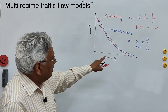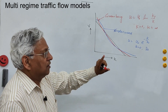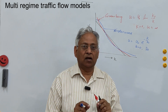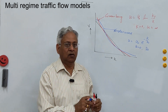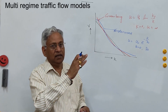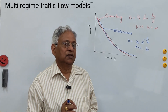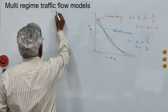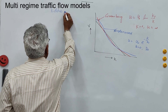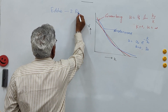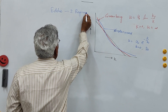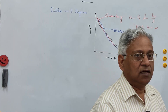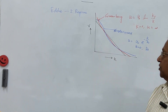Because of these reasons, researchers suggested that a single equation cannot predict speed or density in the entire range of traffic flow. Edie presented the two-regime model. Multiple regime models basically identify the congested condition and the uncongested condition.